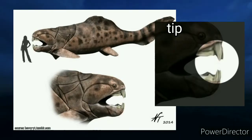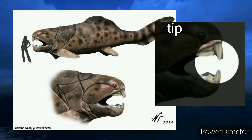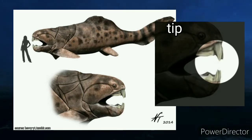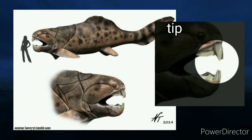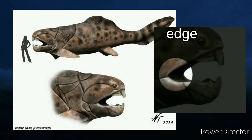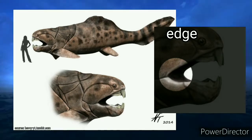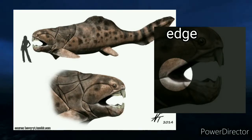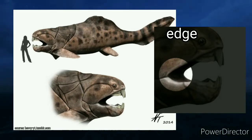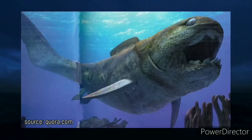Dunkleosteus had an estimated bite force at the tip of 6,000 Newtons — 612 kilograms or 1,349 pounds — and an estimated bite force at the blade edge of 7,400 Newtons — 755 kilograms or 1,664 pounds. This was enough to cut through any animal's armor of its epoch.